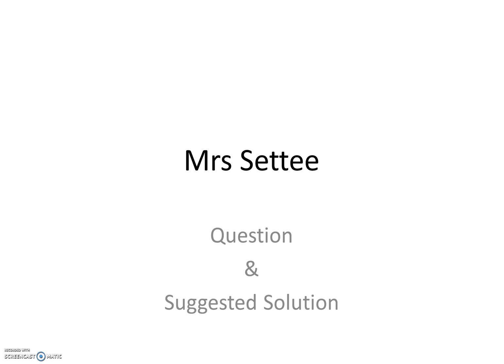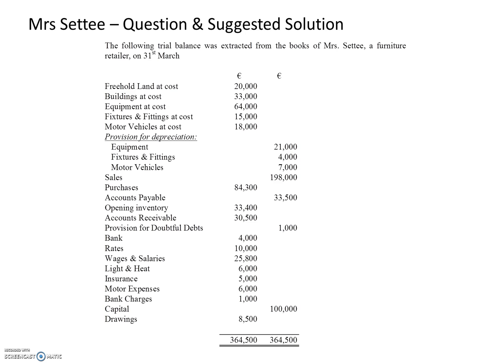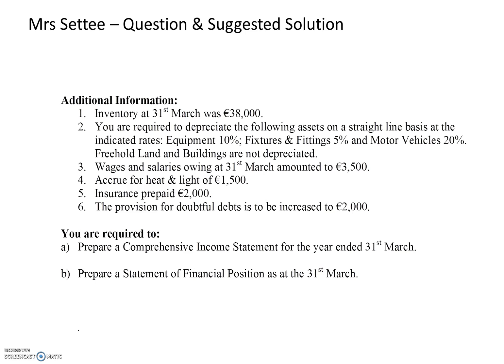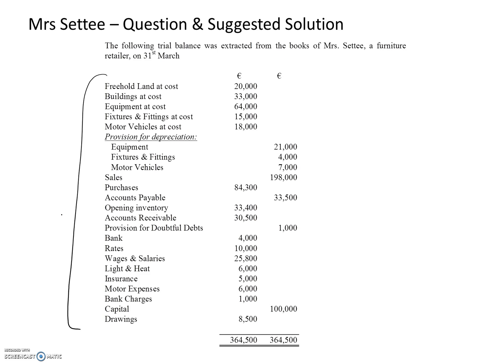In video tutorial number two we will actually prepare the income statement, and in video tutorial number three we will prepare the statement of financial position. Starting off, we have a look at the trial balance and work our way down, discussing where each item is going to go. Each item might indicate whether it goes into the income statement or into the statement of financial position. If it goes into the income statement, I will put the letter T for the trading account or the letter P for the profit and loss account beside the item.